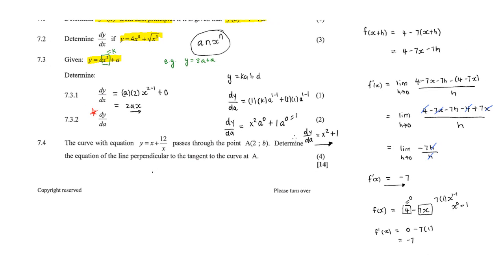Question 7.4 we won't solve in this video — we'll solve it in the next video. I'm just going to set the question up. The question says: the curve with equation y equals x plus 12 over x passes through point A with x-coordinate 2 and y-coordinate b. Determine the equation of the line perpendicular to the tangent to the curve at A.